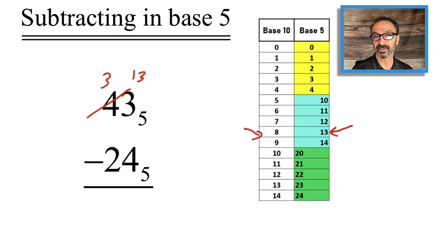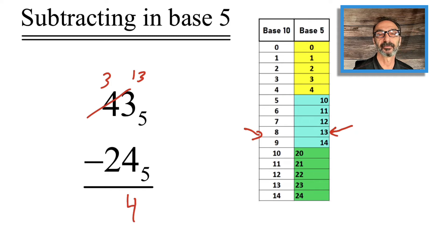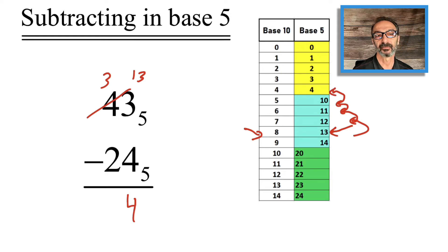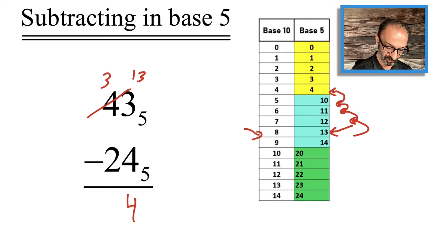Now 1 3 is actually 8 in our system because 1 five and 3 units equals 8. So you can think of it as 8 minus 4, which is 4. Or you can go from 1 3 back 4 steps: 1, 2, 3, 4 — and you land on 4. Then on the second digit to the left, I have 3 minus 2, which is 1. So the answer is 1 4.